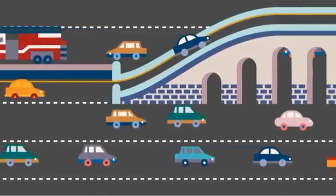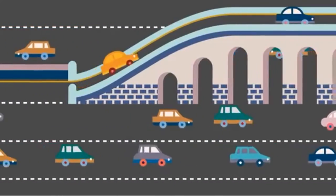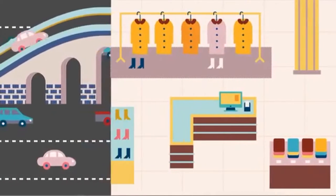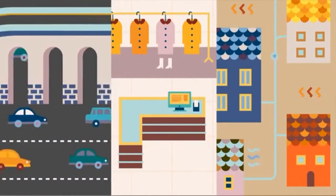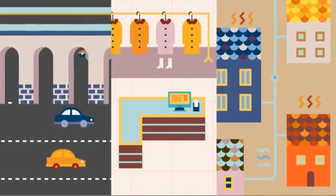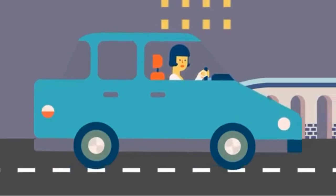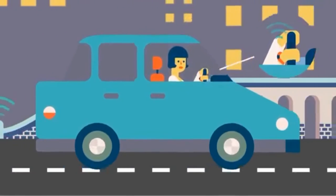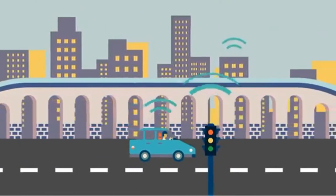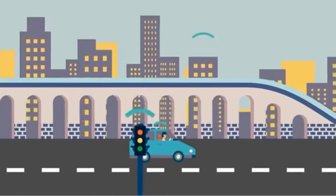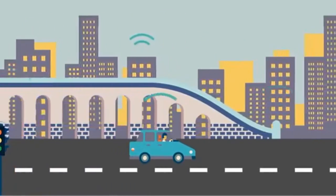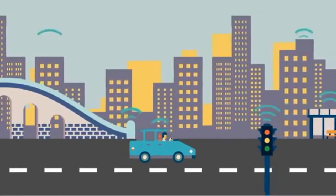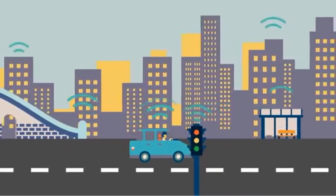The Internet of Things is changing much about the world we live in — from the way we drive, to how we make purchases, and even how we get energy for our homes. Sophisticated sensors and chips are embedded in the physical things that surround us, each transmitting valuable data that lets us better understand how these things work and work together. But how exactly do all these devices share such large quantities of data?